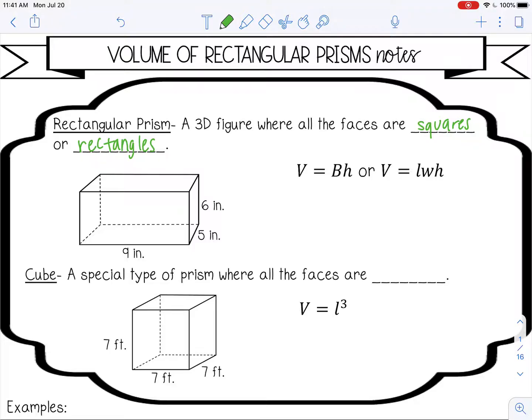And if we want to find the volume of a rectangular prism, there's a couple different formulas you may see. The first one is volume equals base times height, and it's a capital B because it stands for the area of the base.